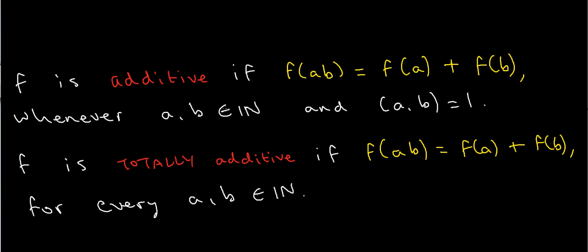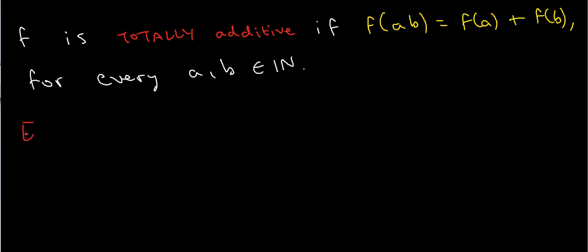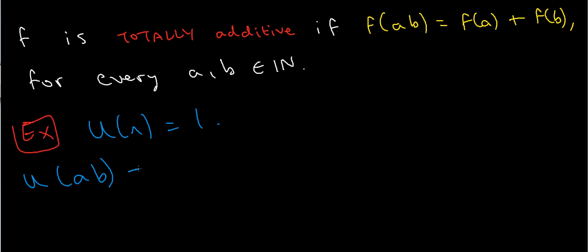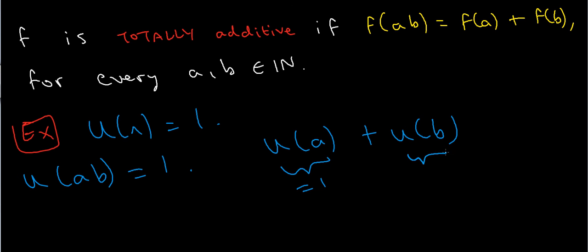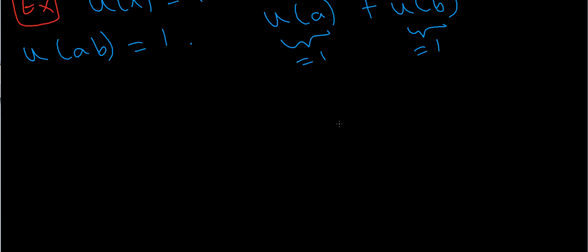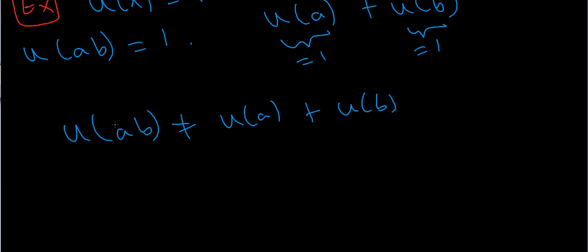Let's see if the unit function u(n) equals 1 is an additive function. Well, u(ab) equals 1, since if a and b are natural numbers then so is ab. But u(a) plus u(b) equals 1 plus 1, which equals 2. So u(ab) is not equal to u(a) plus u(b) — we get 1 on one side and 2 on the other. Since 1 does not equal 2, u is definitely not an additive function.